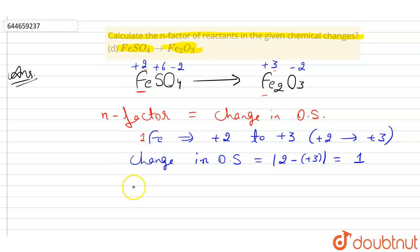And you know that n factor is the change in oxidation state, so therefore the n factor is equal to 1. So that is our answer, the n factor of reactants in the given chemical change is 1.